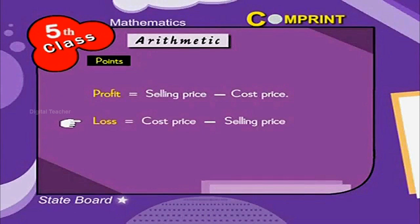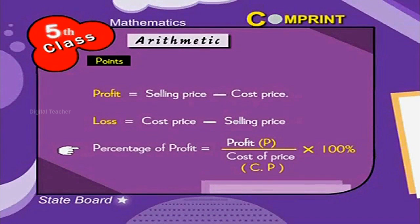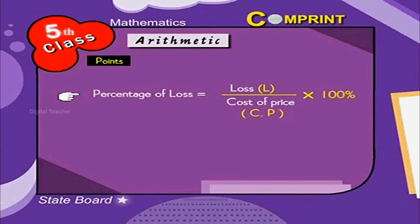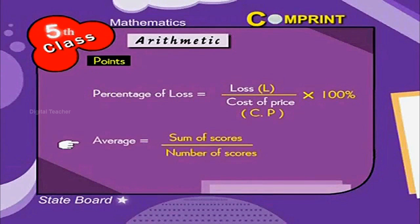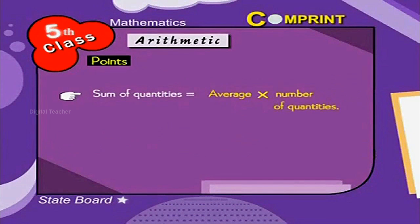Loss is equal to cost price minus selling price. Percentage of profit is equal to P by CP into 100%. Percentage of loss is equal to L by CP into 100%. Average is equal to sum of scores by number of scores. Sum of quantities is equal to average into number of quantities. Number of quantities is equal to sum of quantities by average.